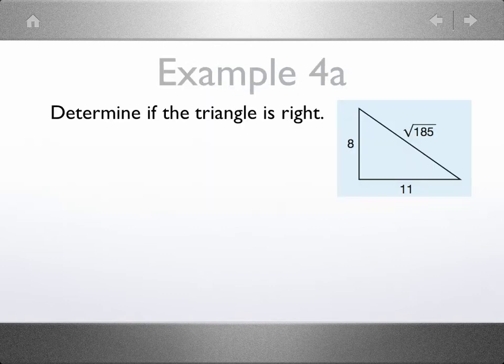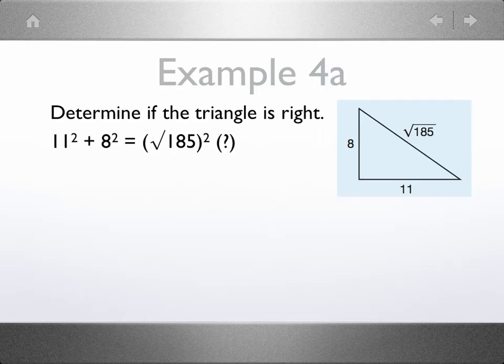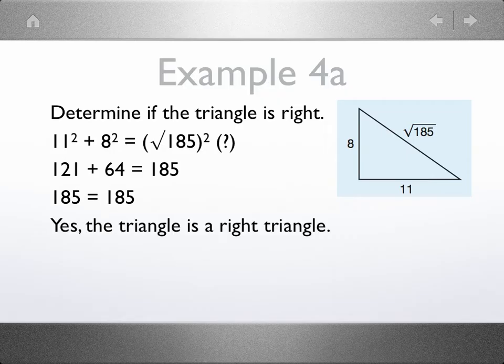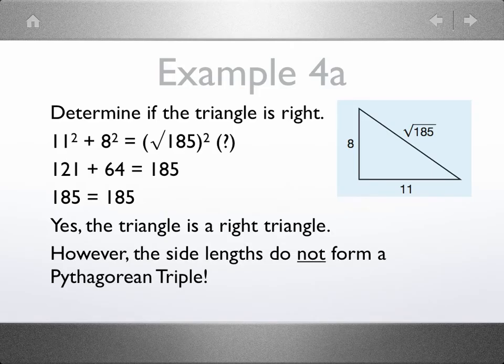So here let's determine if this triangle is right. Notice there's no right angle marking. So we're just going to see, is 11 squared plus 8 squared equal to the square root of 185 squared? Let's do the math. And is this a true statement? Yes, it is. Therefore, this triangle is a right triangle. Bonus question: do these three numbers representing the side lengths form a Pythagorean triple? They do not, because that hypotenuse is not a whole number.